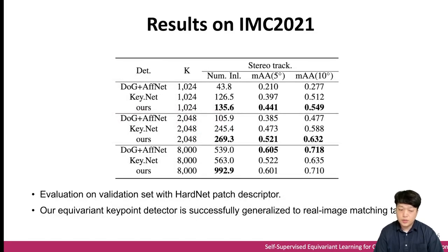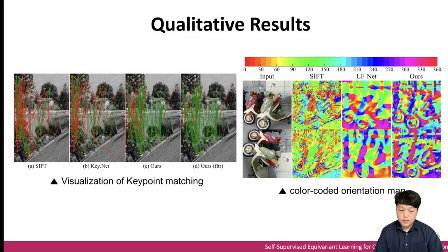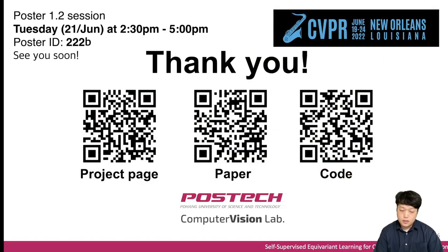This slide shows the results of generalization on the Image Matching Challenge 2021 datasets. With a smaller number of key points — 1024 and 2048 — our method finds more correct camera pose estimation accuracy. This slide also shows visualizations of key point matching and a color-coded orientation map. This is the end of our presentation. Our paper will be presented on June 21 with poster ID 222B. Thank you for listening.